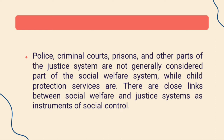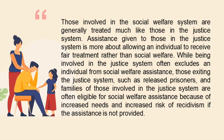Welfare money is paid to persons from a government who are in need of financial assistance but who are unable to work for pay. Police, criminal courts, prisons, and other parts of the justice system are not generally considered part of the social welfare system, while child protection services are. There are close links between social welfare and justice systems as instruments of social control. Those exiting the justice system, such as released prisoners, and families of those involved in the justice system are often eligible for social welfare assistance because of increased needs and increased risk of recidivism if the assistance is not provided.